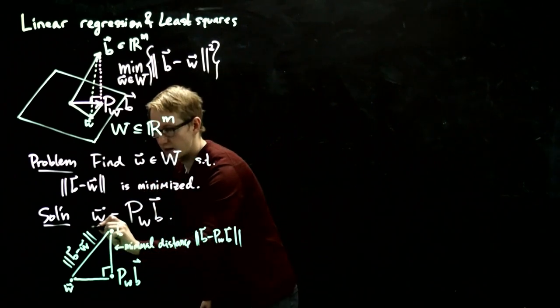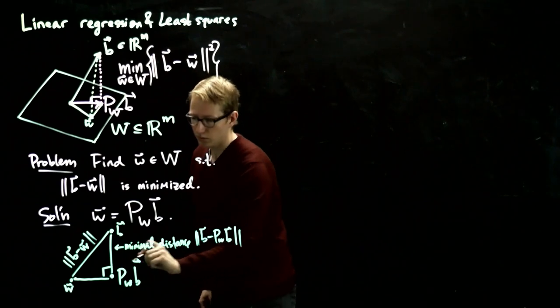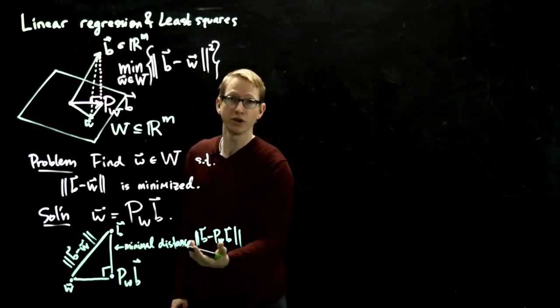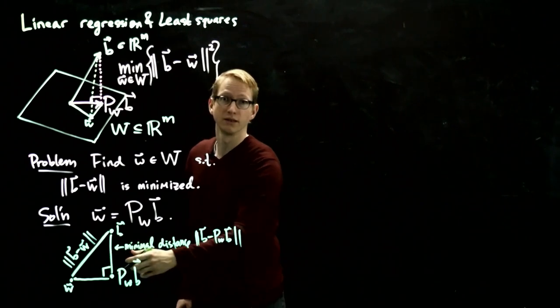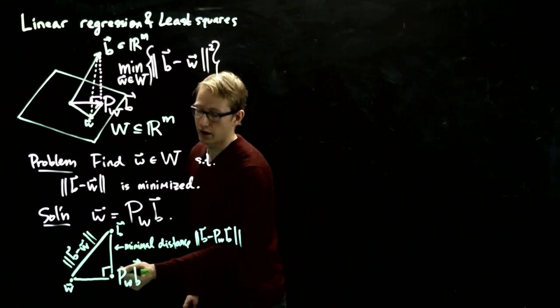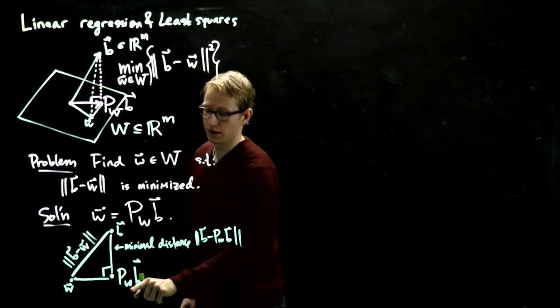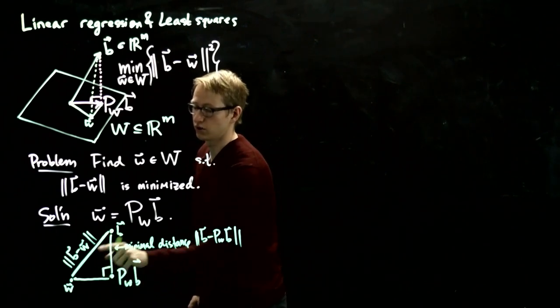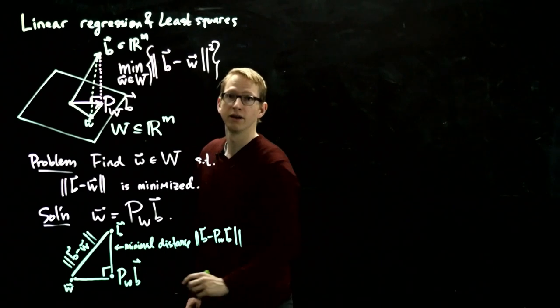And because this is a hypotenuse of this triangle, we know that this distance is always going to be greater than or equal to either of these two distances. No matter what w is, this will always create a right triangle, unless w equals this vector right here. And in all other cases except this one, this distance is always going to be strictly greater than this distance.